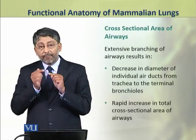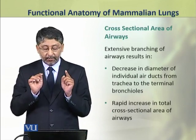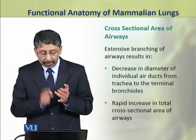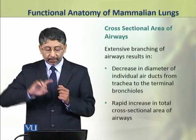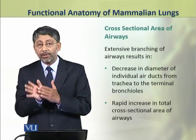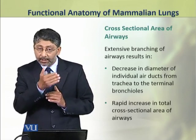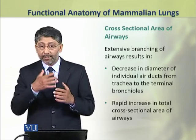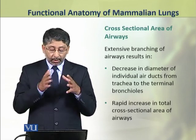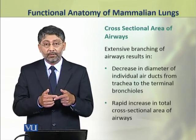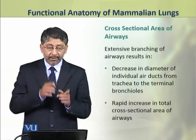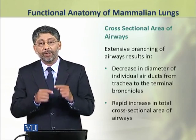The extensive branching found in the lungs results in a decrease in the diameter of individual air ducts from the trachea to the terminal bronchioles. As more division occurs, the diameter of individual airways keeps reducing, so the largest diameter is in the trachea and the smallest is in the terminal bronchioles. But at the same time, the total cross-sectional area of the airways is increasing rapidly.